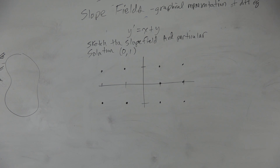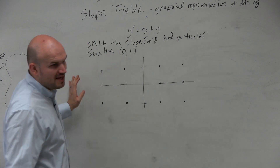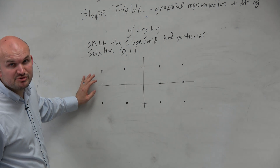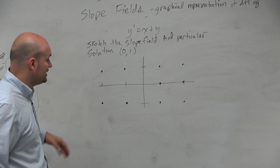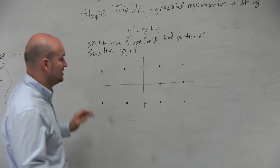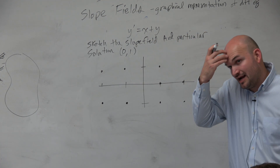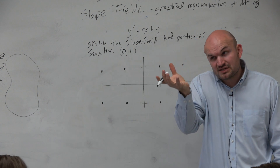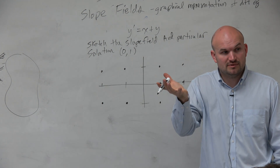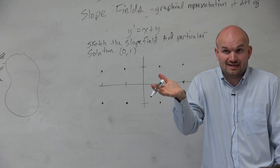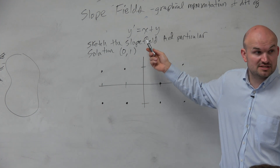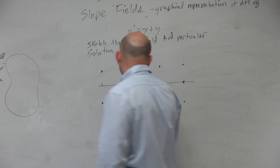So again, ladies and gentlemen, all we're looking into doing here — I'm not going to spend time plugging in the points. But a couple of things I can visually look at: the first thing I want to do is, does it equal 0? And if I plug in the point (0, 0), I know that's a slope of 0.